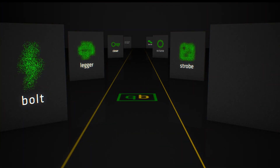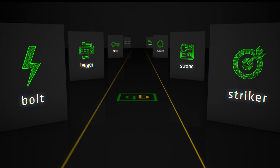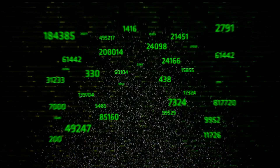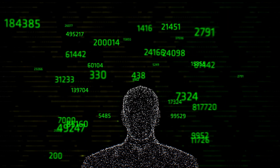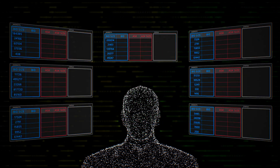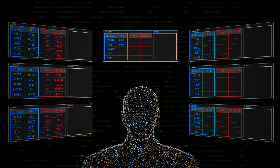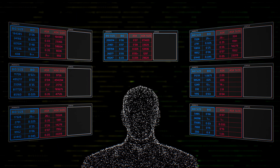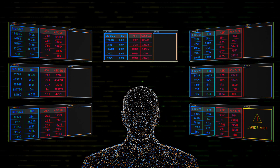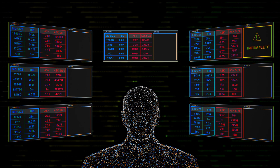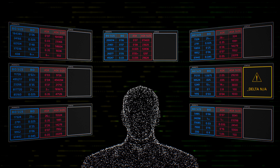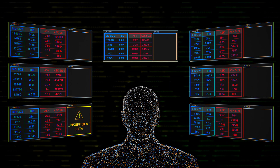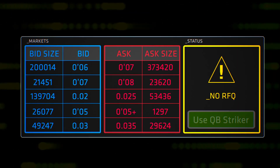Quantitative Brokers presents Stryker — the revolutionary algorithm explicitly designed for options on futures. Markets are not always what you see. Under the complex microstructure of the listed options market, manual price discovery can be highly laborious. The traditional human approach to trading options is time-consuming and often misses out due to inefficiencies when trading complicated structures.